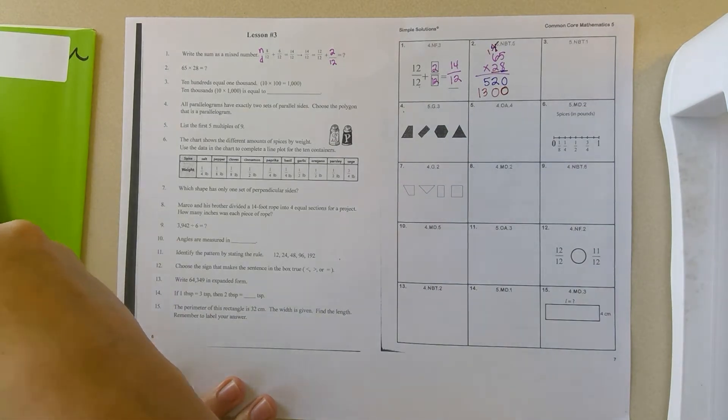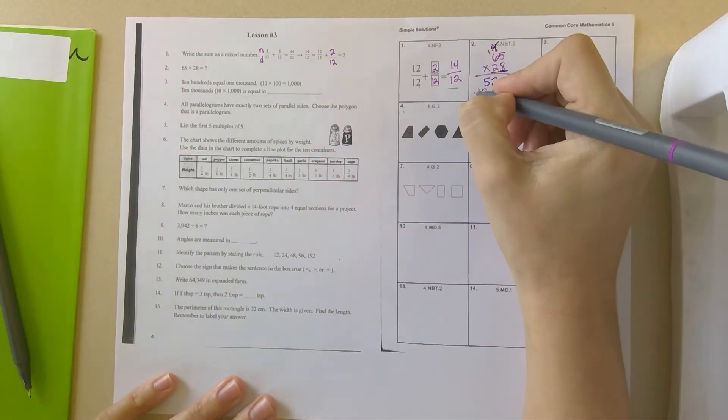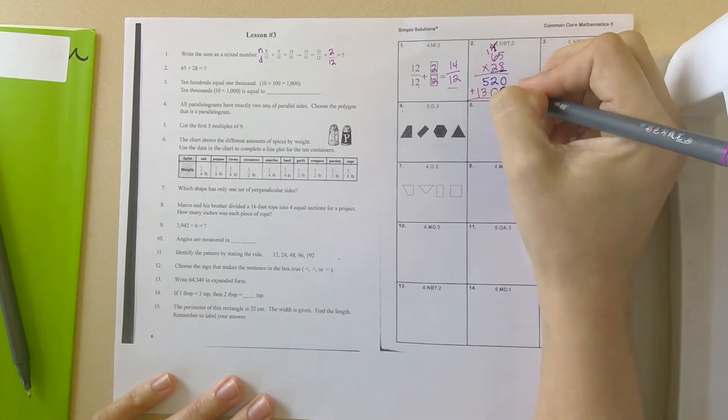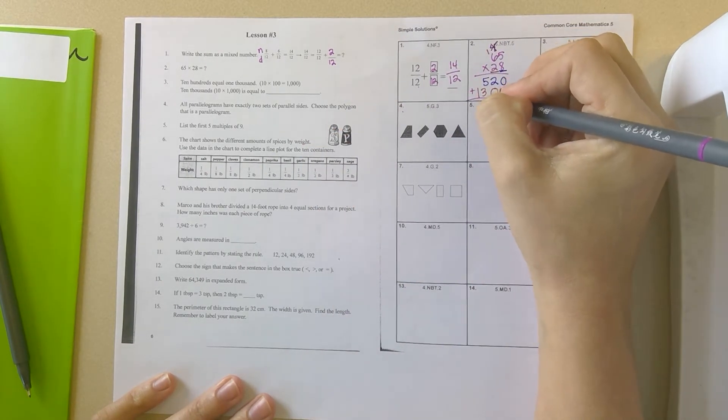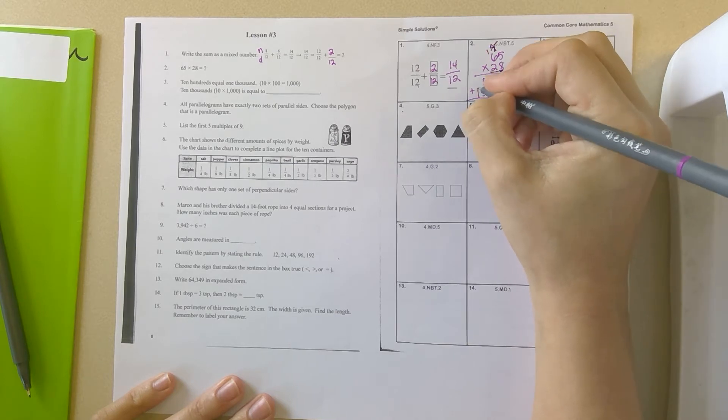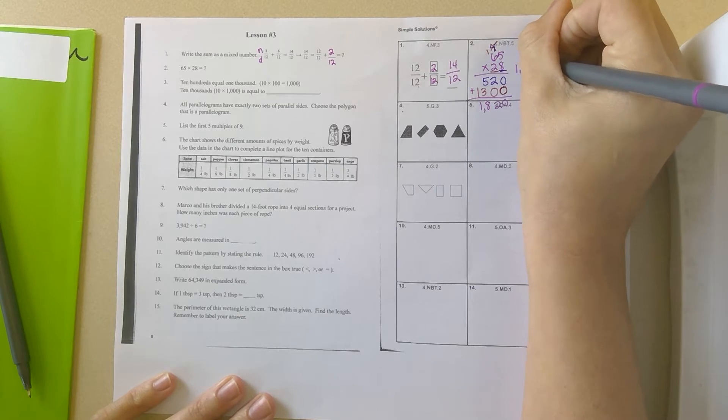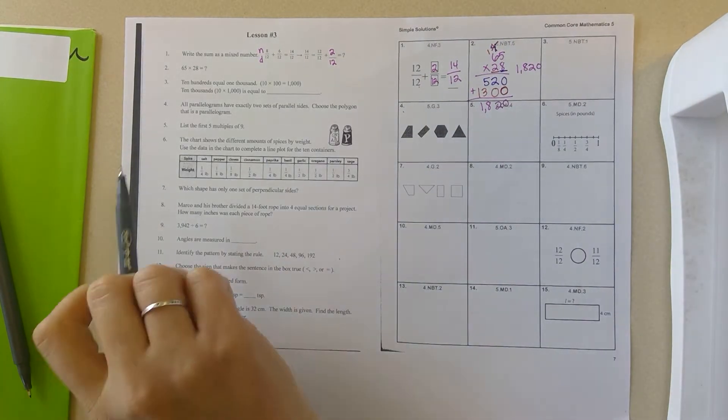I'm going to end up adding these two numbers. Notice that I'm keeping my 1s, 10s, 100s, and 1000s lined up. 0 and 0 make 0. 2 and 0 is 2. 5 and 3 is 8. Bring the 1 down. So that is 1,820.